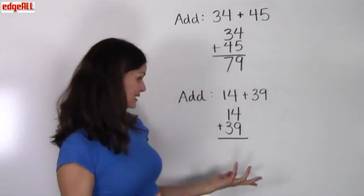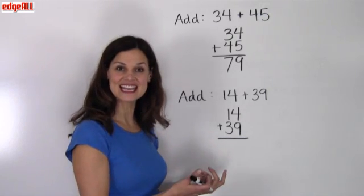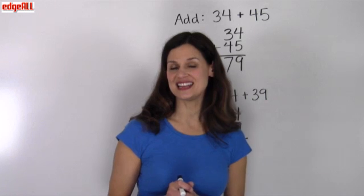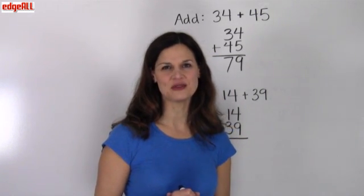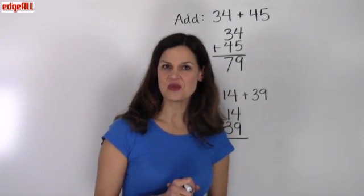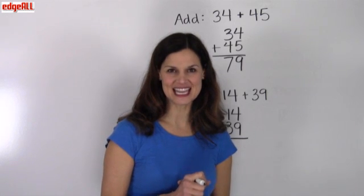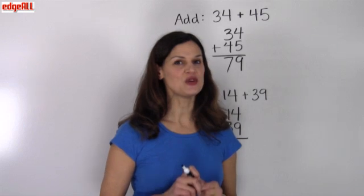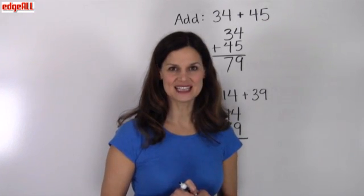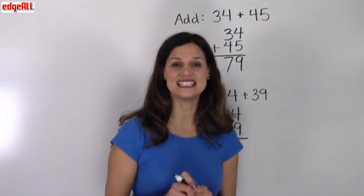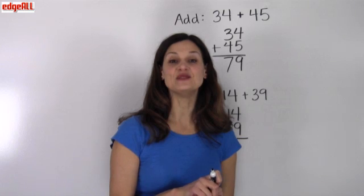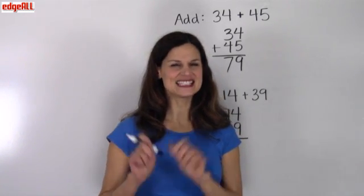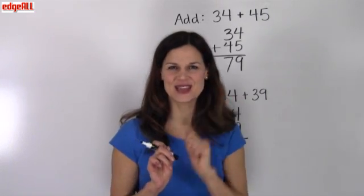Where am I supposed to write the 13 in the answer? To understand how to do problems like this, we need to know the concept of regrouping. Anytime you add two digits together and the result is more than 9, you only write the rightmost digit below and you move one to the next digit to the left. It's a little difficult to understand, so let's look at a few examples.